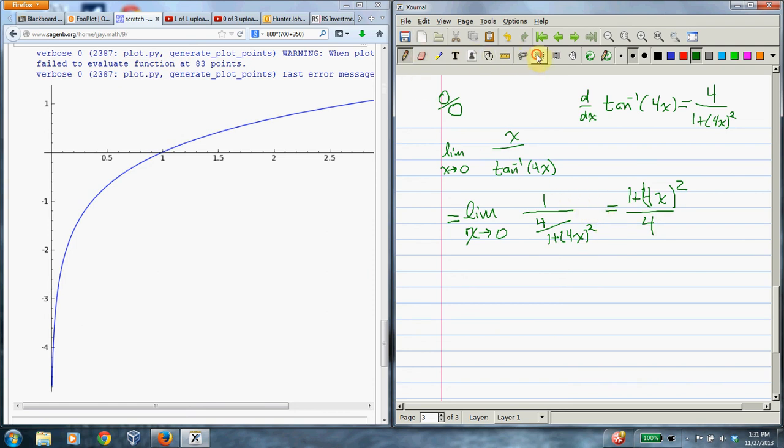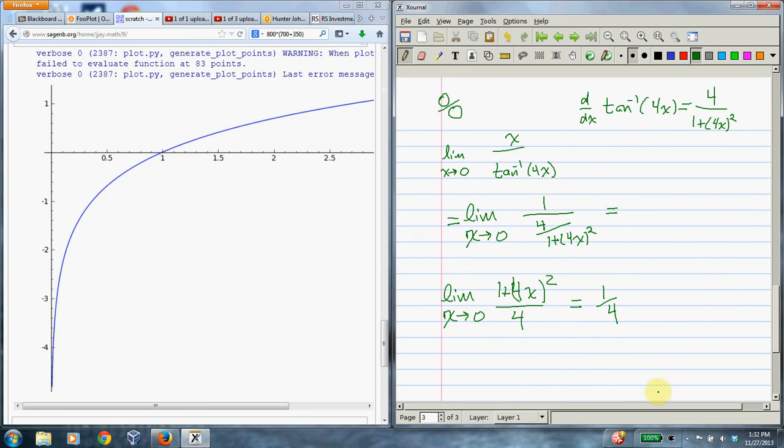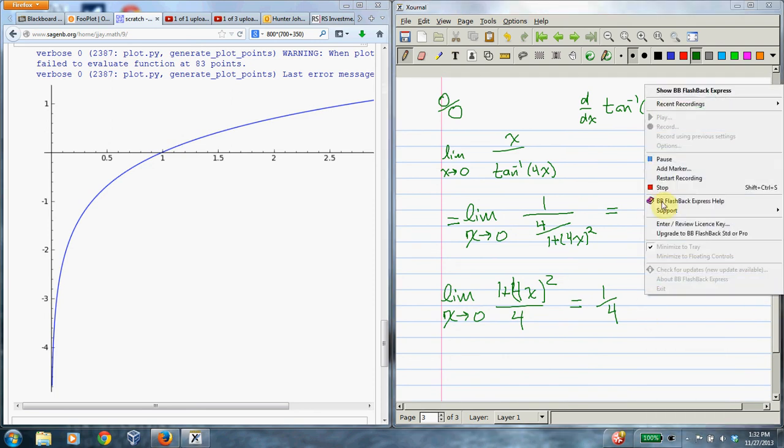And I forgot to write the limit. I'm just writing just like a baby. Sorry that my handwriting is so bad. So this is what we've got. And what is that? Well, now there's no reason not to plug in, so it's just 1 fourth. And that's it. So that's as bad as it gets. I mean, I'll probably ask you something easier than that on the exam. So that's L'Hopital's rule for you.